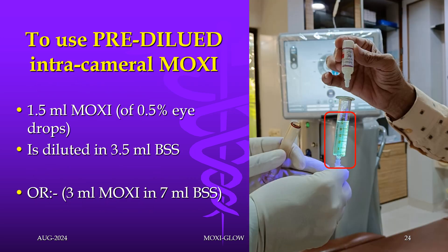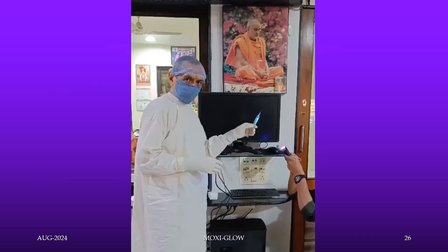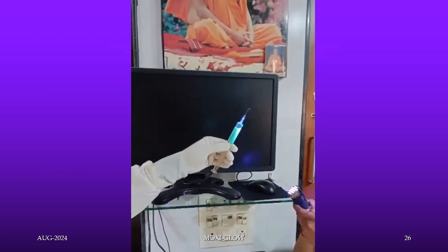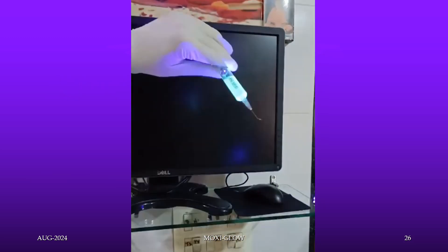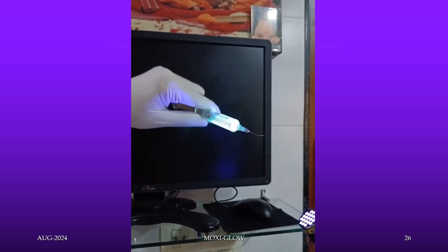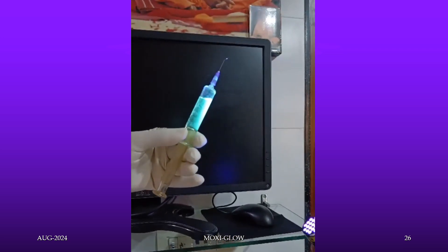The ideal concentration of moxifloxacin is 1500 micrograms per ml, and we should fill the full anterior chamber with it. To make this, we add 1.5 ml moxifloxacin in 3.5 ml BSS, which we call the moxifloxacin mix, giving 1500 micrograms per ml. Please note that after closing the syringe with the piston, we need to gently shake the moxifloxacin mix a few times to homogenize it, because moxifloxacin is not readily miscible in BSS.